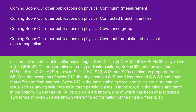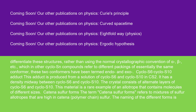Two forms of cyclo-S18 are known where the conformation of the ring is different. Rather than using the normal crystallographic convention of alpha′, beta′, etc., which in other cyclo-SN compounds refers to different packings of essentially the same conformer, these two conformers have been termed endo and exo. The cyclo-S6/cyclo-S10 adduct is produced from a solution of cyclo-S6 and cyclo-S10 in CS2. It has a density midway between cyclo-S6 and cyclo-S10. The crystal consists of alternate layers of cyclo-S6 and cyclo-S10, making it a rare example of an allotrope that contains molecules of different sizes.